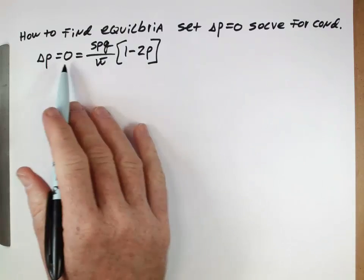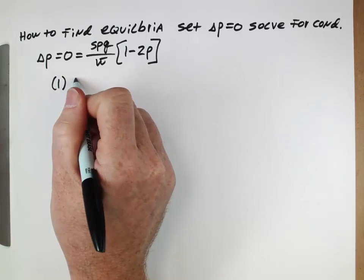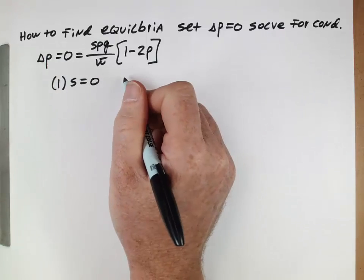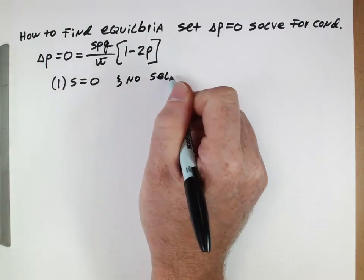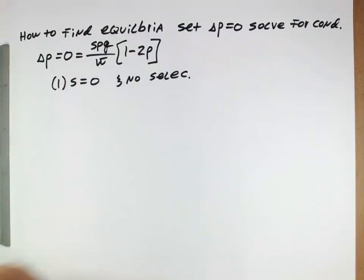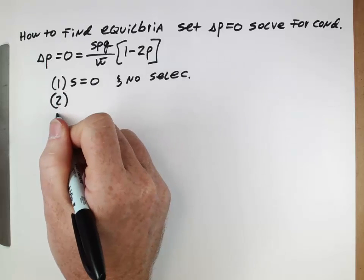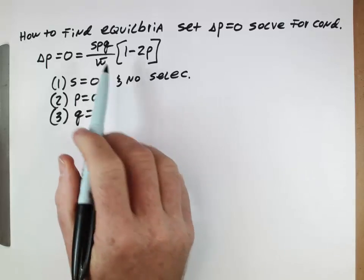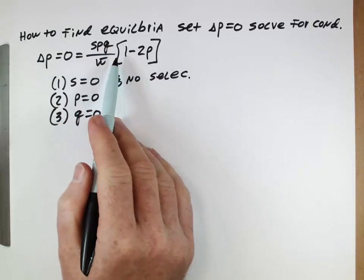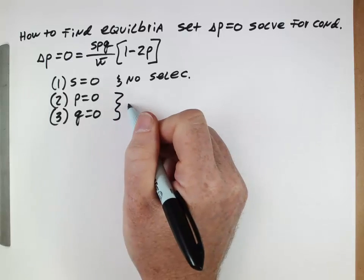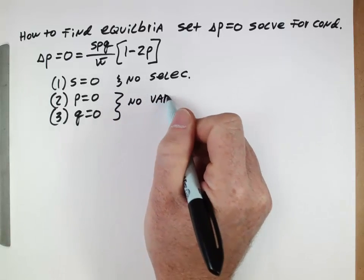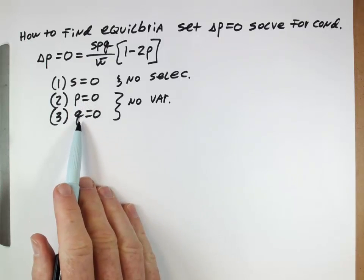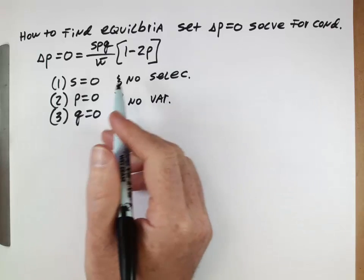So when is this true? Well, it's true when S is equal to 0. This would be true, but that's not really that interesting. That's when there's no selection, right? If there's no fitness benefit to any of the genotypes. The other way in which this can be true, or the other two ways this can be true is if P is equal to 0, or Q is equal to 0. Those terms could be equal to 0. That whole thing would be equal to 0. This also isn't quite so interesting. That's when there's no variation. If P is equal to 0, that means every individual is a lowercase a homozygote. If Q is equal to 0, that means every individual is a capital A homozygote.